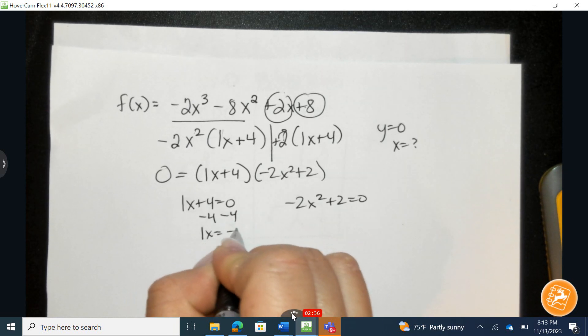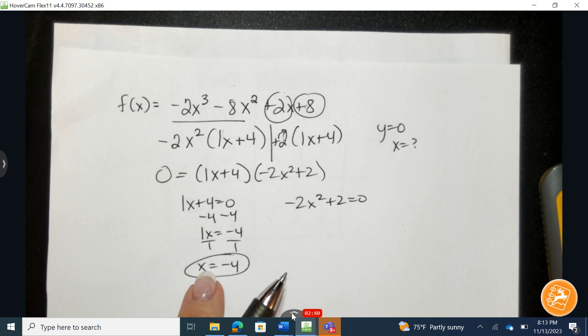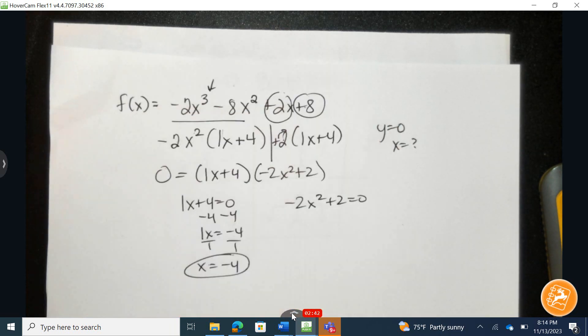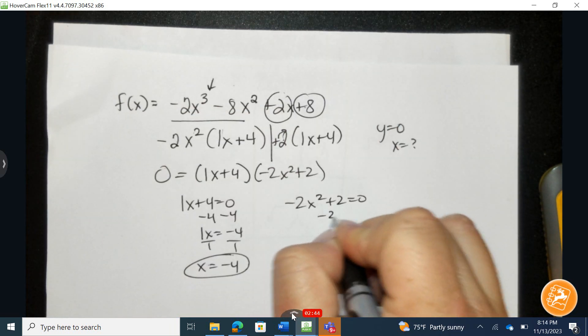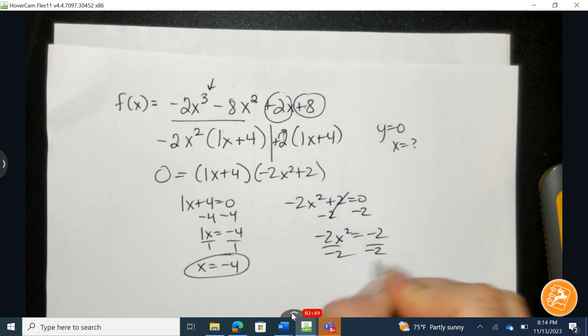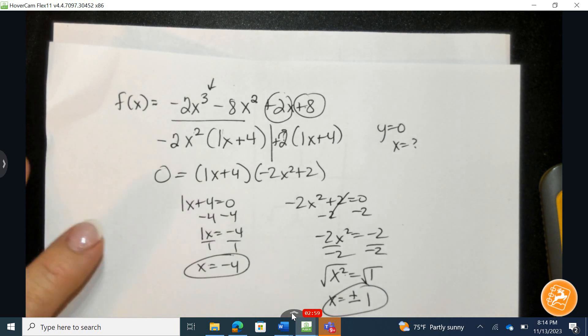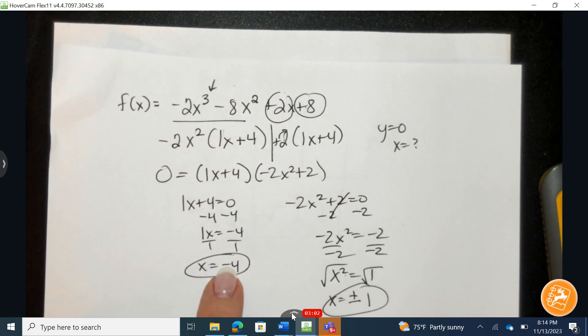Subtract 4 to the opposite side. Make sure to show all of your work. Divide by 1, and one x-intercept is negative 4. Notice that looks like I'm probably going to have 3. Subtract 2 to the other side. Divide by negative 2. Here's a common mistake. This tells me I'm going to have 2 answers. So x equals positive and negative 1. So I need to find right now positive and negative 1 and negative 4.